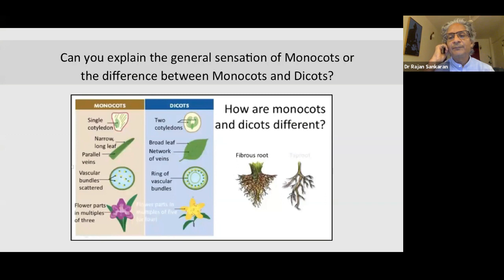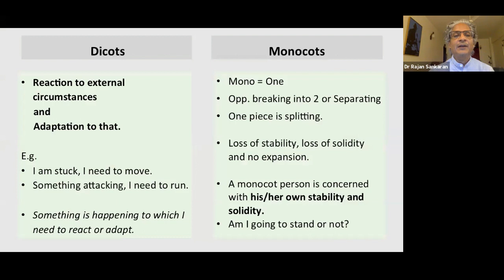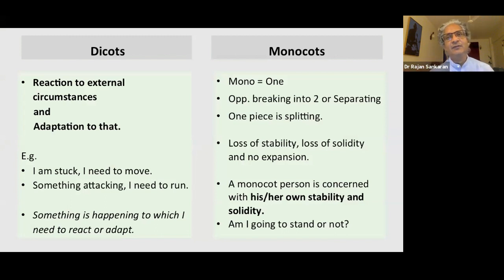The main difference in homeopathy is that the dicots react to external circumstances and adaptation to that. Basically: I feel stuck, somebody's holding me, I need to move — or something is attacking me, I need to run. So something is happening from the outside to which I need to respond or react.